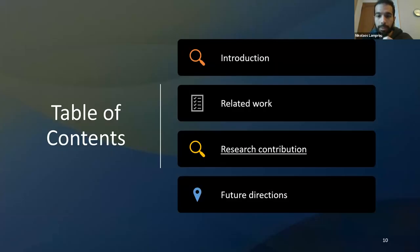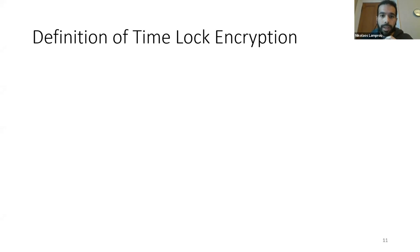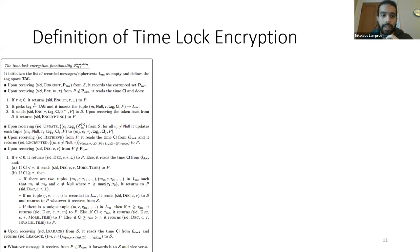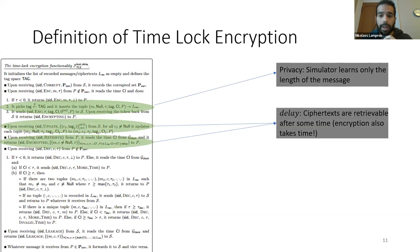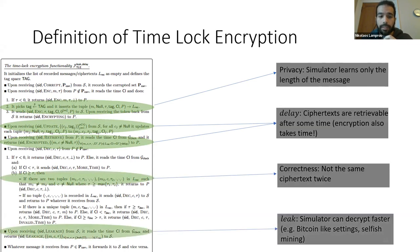Regarding our research contribution, we define the concept of time-lock encryption in the UC framework by defining an ideal functionality F_TLE. We capture privacy, delay — where we also assume that encryption takes some time — correctness, and finally leak, because the adversary might possess an advantage in the decryption time over honest parties. Ideally the leak function should be equal to the identity, meaning the adversary has no advantage.